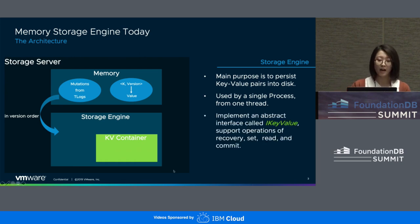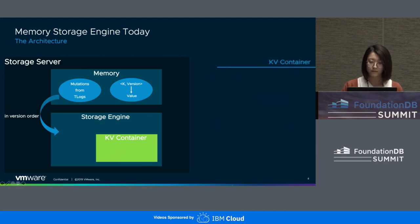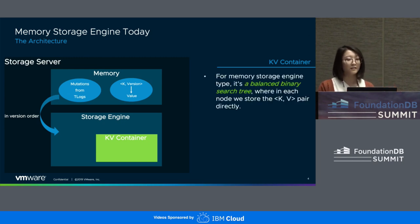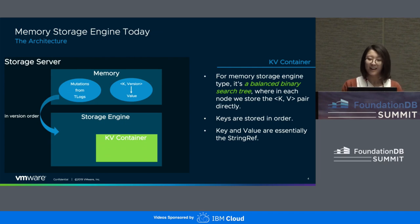All storage engine types, including SSD and memory, implement the abstract interface called IKeyValue. This interface supports operations of recovery, set, read, rearrange, and commit. Then we come to the lowest level and our main focus today: the Kiwi container. For the current implementation, it's a balanced binary search tree where in each node we store the key-value pairs directly. Keys are stored in order. Both key and value are essentially a StringRef. StringRef is a data type widely used inside FDB — you can think of it as a reference to heap space, and we will get to the details later.